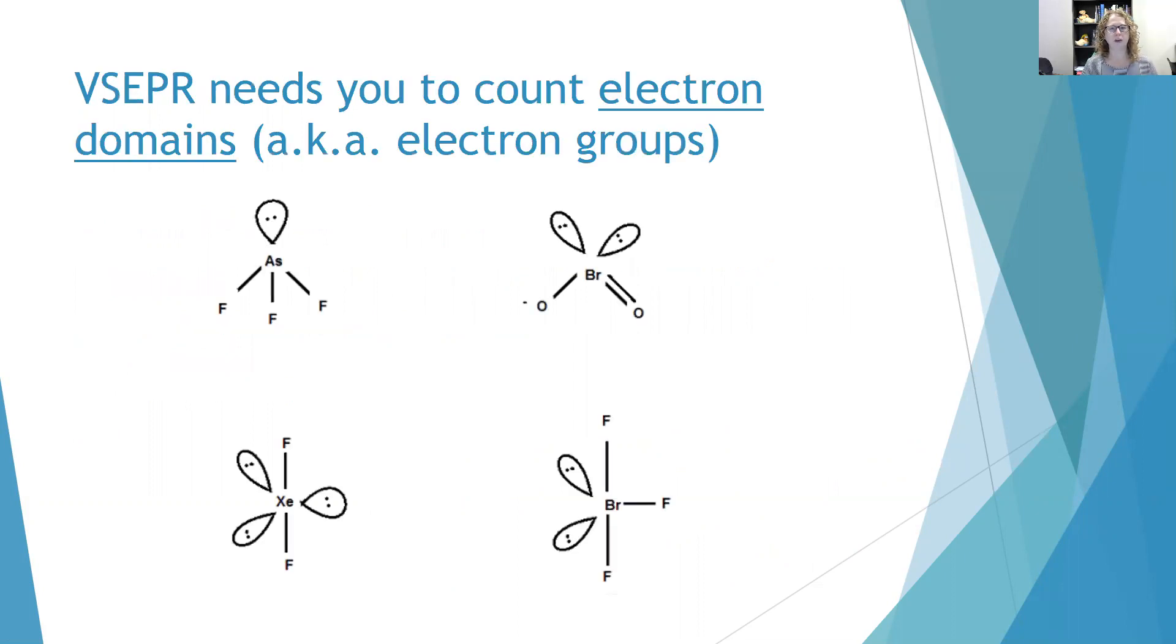To do VSEPR, we need to count electron domains. Other words for these are electron groups. You might see that in some practice problems. Your book calls them electron pairs. And that's actually a term I don't like. So I'd prefer for you to use electron domains or electron groups. And all that an electron group is, is something that's around a central atom.